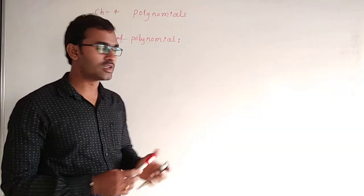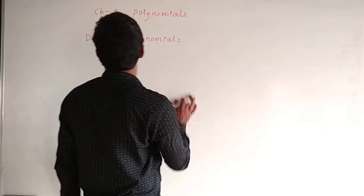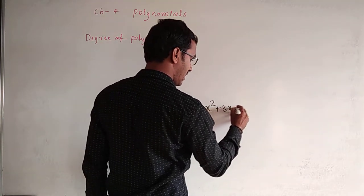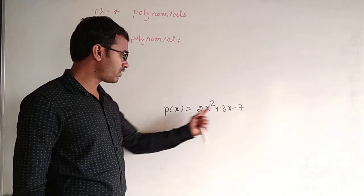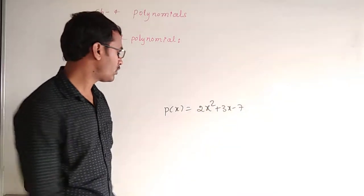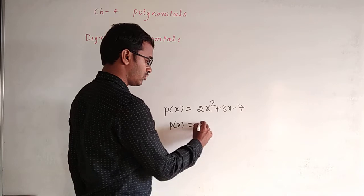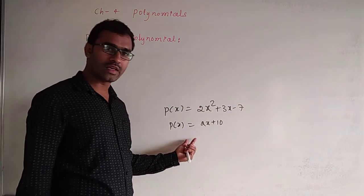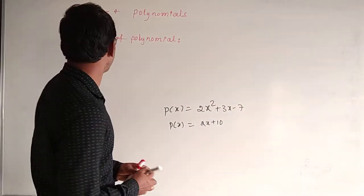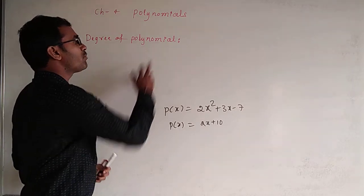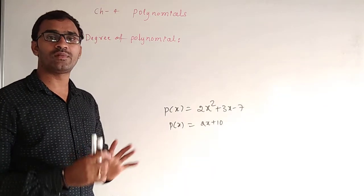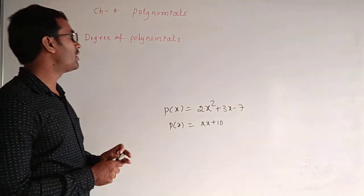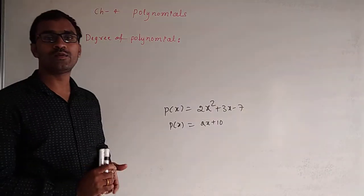What is the degree of polynomial? What is the formula? An example of a polynomial is P(x) = 2x³ + 3x − 7. Another example: P(x) = 2x + 10. Both are examples of polynomials.